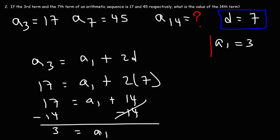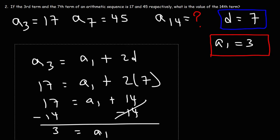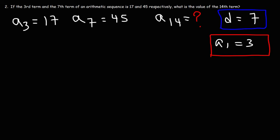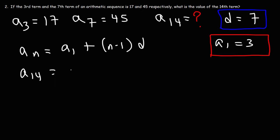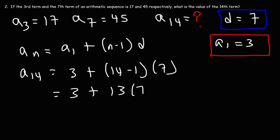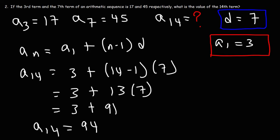So now that we have the first term and the common difference, we can calculate the 14th term of the arithmetic sequence using this formula. n is 14, a sub 1 is 3, and d is 7. 14 minus 1 is 13. 13 times 7: 10 times 7 is 70, and 3 times 7 is 21. 70 plus 21 is 91. So the 14th term is going to be 3 plus 91, or 94. This is the answer to the problem.